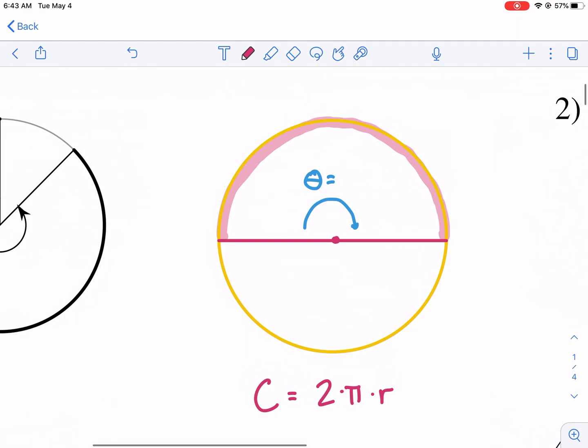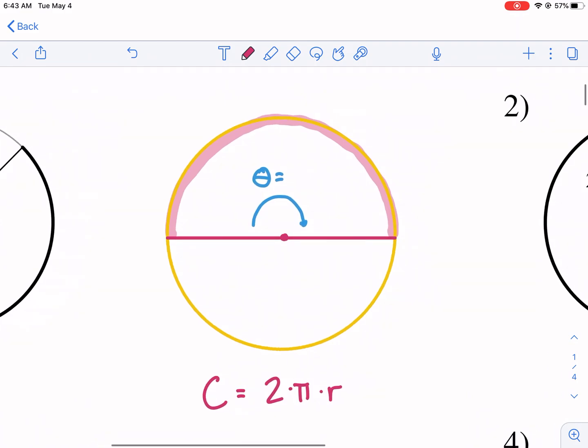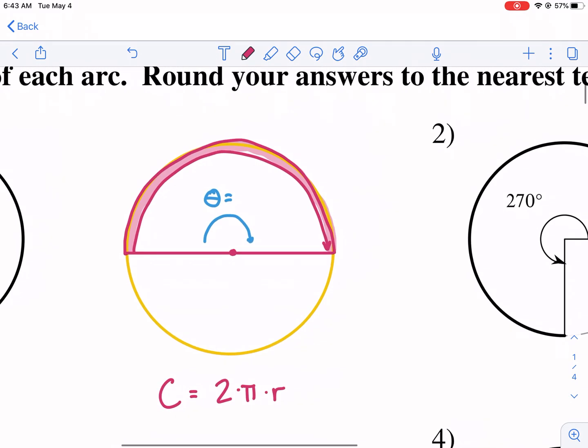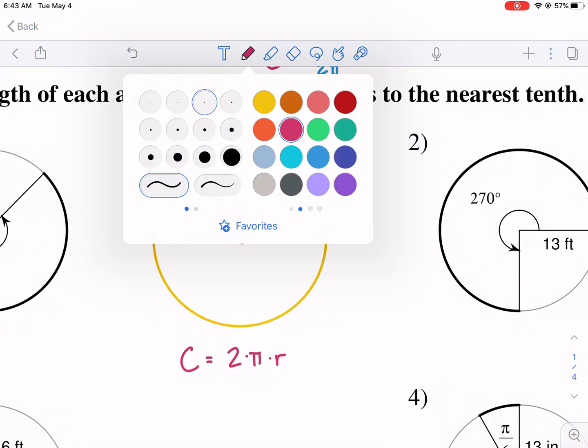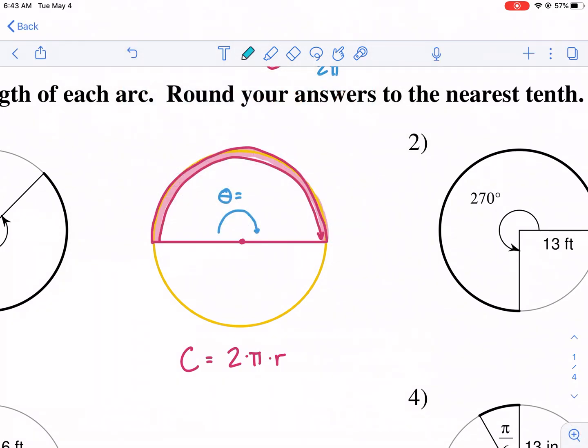And I like starting with half a circle to start. For example, if we had this circle, this yellow circle here, but we only wanted this portion of the arc length, the outside edge right here. So half the outside edge, how would we go about finding that? Well, we know that the entire circle is 360 degrees. So half of that would be 180 degrees.